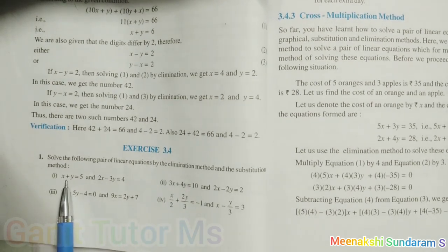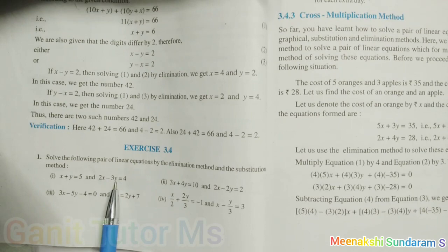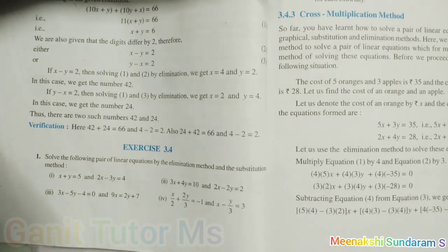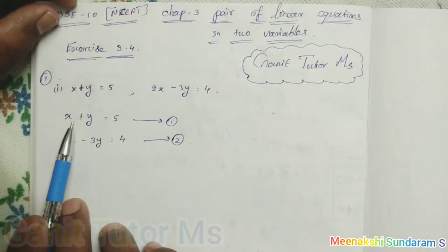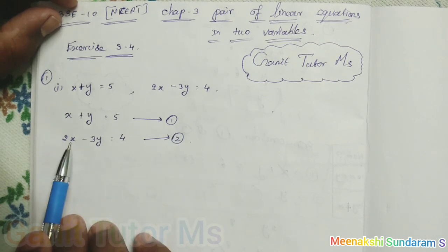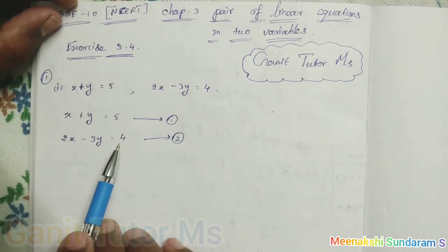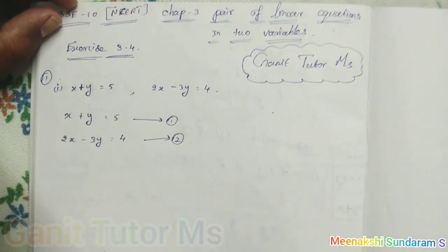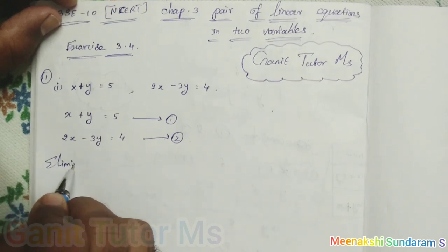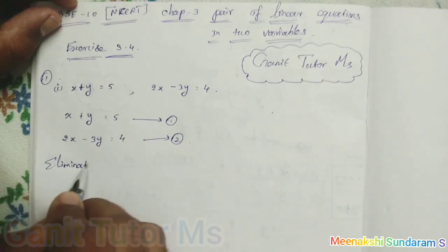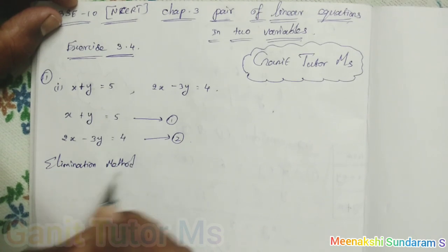The first equation they have given here: x plus y is equal to 5, and 2x minus 3y is equal to 4. So x plus y equals 5 is equation number 1, and 2x minus 3y equals 4 is equation number 2. First we can use the elimination method.